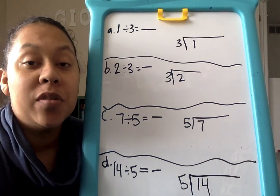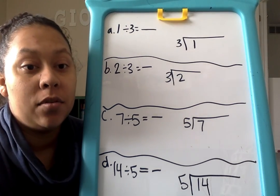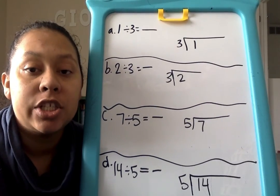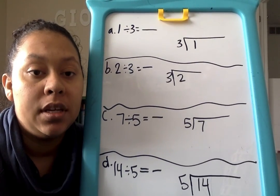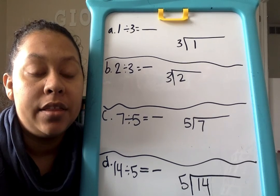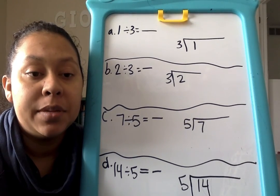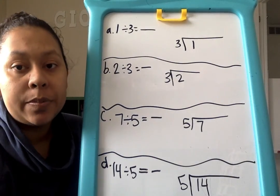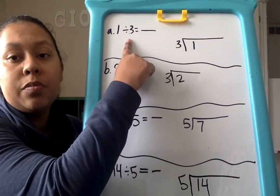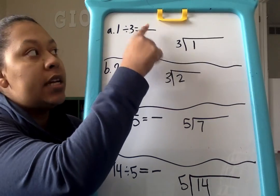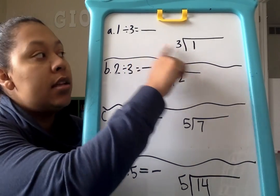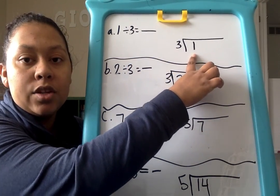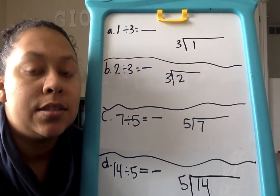Hi, so we have Module 4, Lesson 4. Our learning target for today is: I can see a fraction as a division problem. We're going to start with problems number 1, A through D. What we're doing is basically just taking a division problem and rewriting it as a fraction, and also using the long division algorithm to see how that connects to the answers.